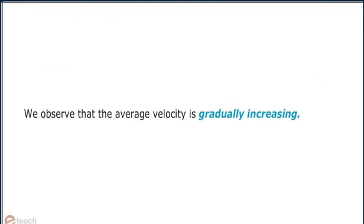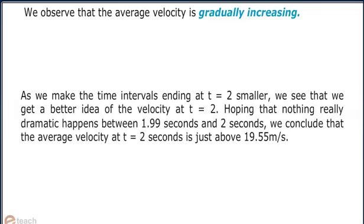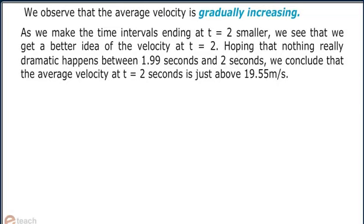We observe that the average velocity is gradually increasing. As we make the time intervals ending at t equals 2 smaller, we see that we get a better idea of the velocity at t equals 2, hoping that nothing really dramatic happens between 1.99 seconds and 2 seconds.